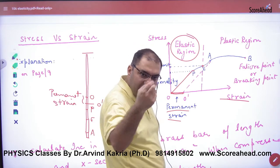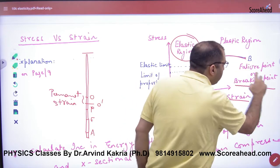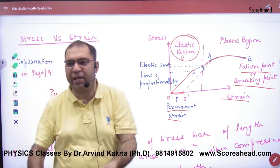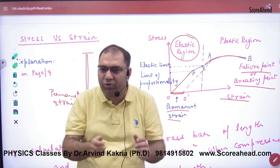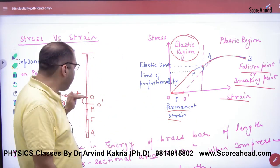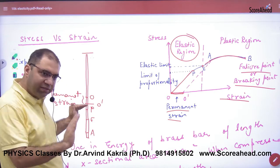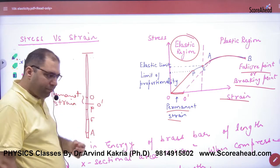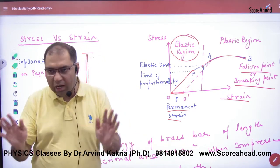If you remove the weight, the stress produced leads to a failure point or breaking point, and ultimately the wire breaks. Up to P, Hooke's law applies. The elastic region extends to E. Cross A and permanent strain is produced. After that, the wire breaks.